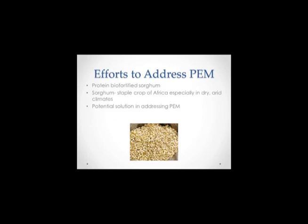Efforts to address PEM include protein bio-fortified sorghum. Sorghum is a staple crop of Africa, especially in dry, arid climates, and is a potential solution for addressing PEM. By putting protein into the sorghum, which is a staple crop of many sub-Saharan African countries, we can combat the shortage of protein within the diet. This was found in our research.